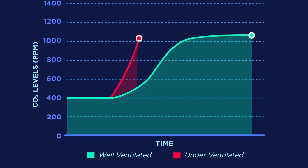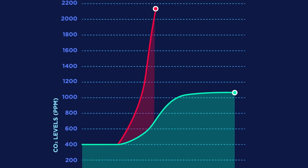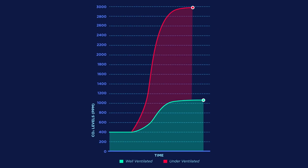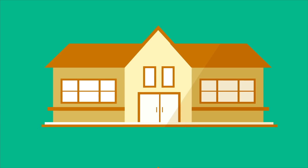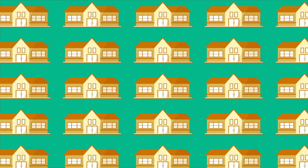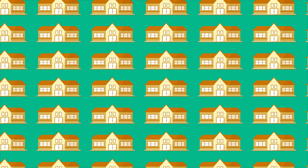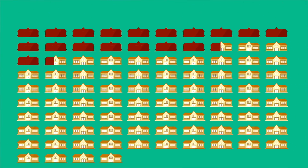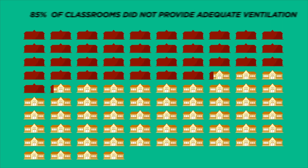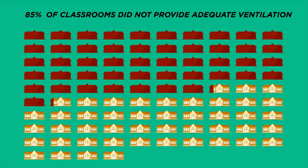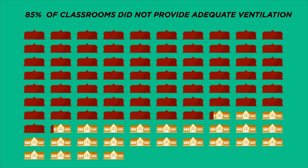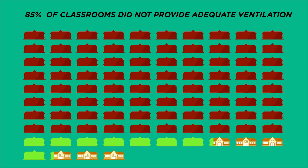In a classroom with ventilation problems, CO2 will keep climbing, sometimes as high as 3,000 ppm. Research from around the world shows there are high CO2 levels in many classrooms. For example, in a 2019 study, researchers found that about 85% of 94 recently installed HVAC systems in California K-12 classrooms did not provide adequate ventilation.